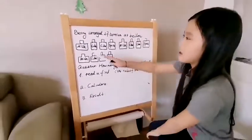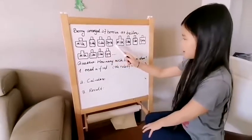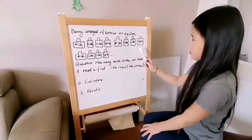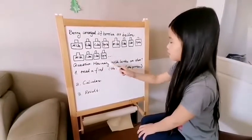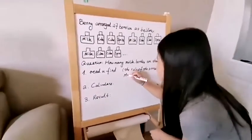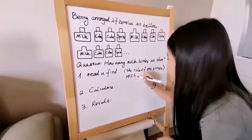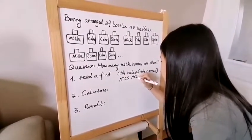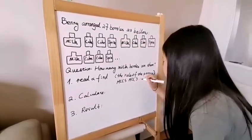The rule of the pattern is: Milk, Coke, Coke, Sprite. Milk, Coke, Coke, Sprite. Milk, Coke, Coke, Sprite, and so on. Let's write it here. Milk, Coke, Coke, Sprite. Milk, Coke, Coke, Sprite, and so on.